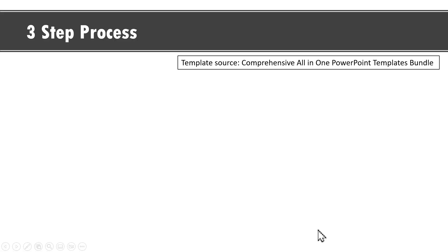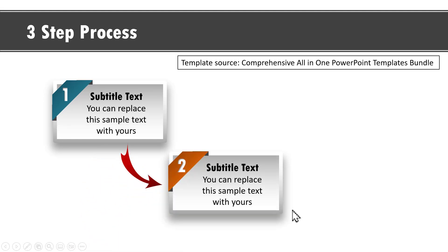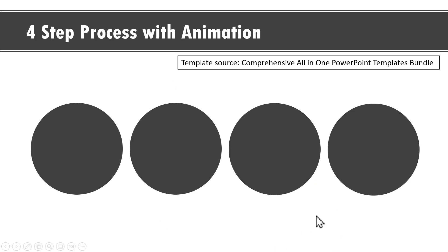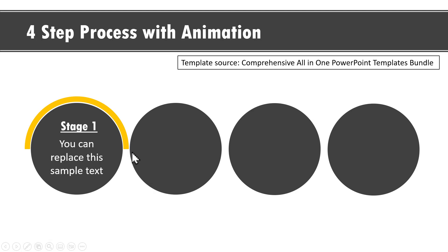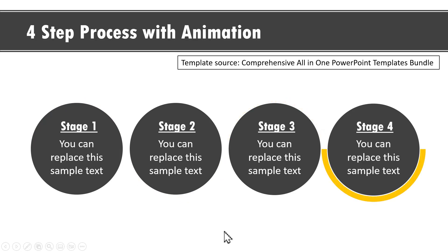I'll show you two templates from the Comprehensive All-in-One PowerPoint Templates Bundle. The first explains a three-step process: on a click we show the first step, then a hand draws an arrow to the second step, and after explanation the same hand draws to the third step. Here's another template with a four-step process: the first step is highlighted, then on each click the attention moves to stage two, three, and four. Did you figure out how I created these animations?